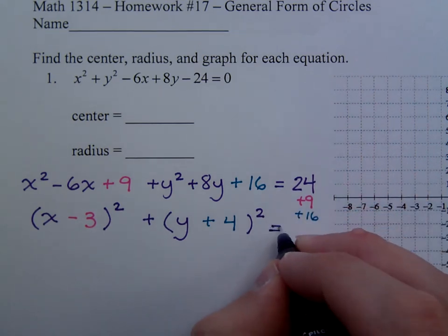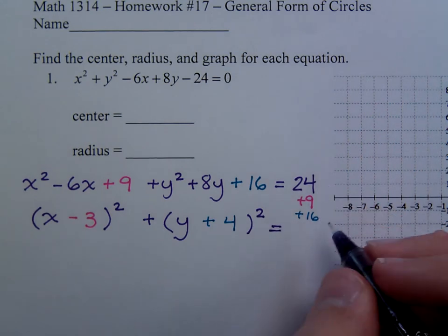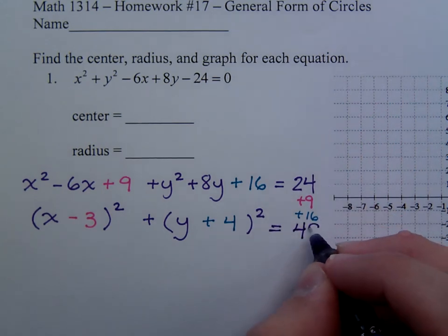So when this is all said and done, 24 plus 9 plus 16 is 49.